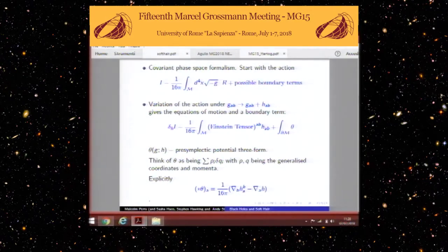If you vary this action, sending the metric to G plus H, then you will find the equation of motion in the bulk integral for the action, but you'll also find some surface terms, which I've called here theta. Theta is a functional of the metric of the spacetime that you started with and a perturbation of the metric H, and is usually referred to as the pre-symplectic potential three-form. It's evaluated on the boundary of whatever bit of spacetime you're interested in. The way you should think of this is being rather like the sum over πδq_i, where p and q are the generalized momenta and coordinates. This is just a covariant way of writing what happens in phase space.